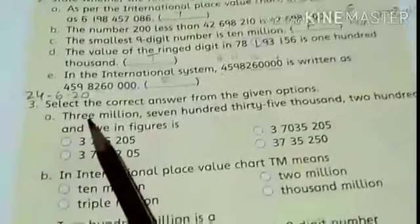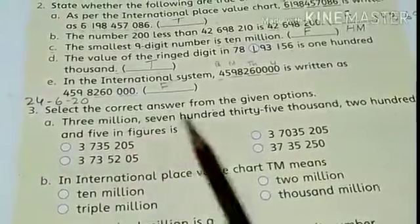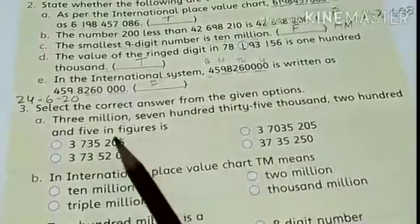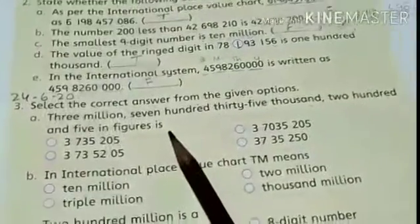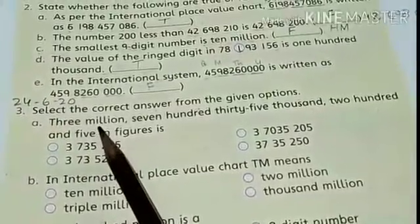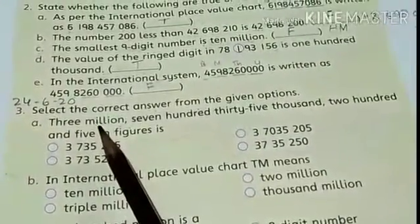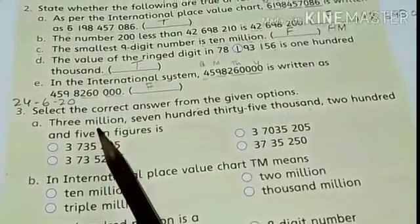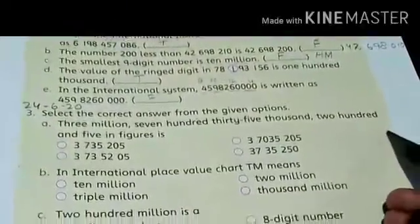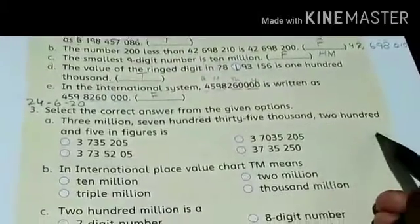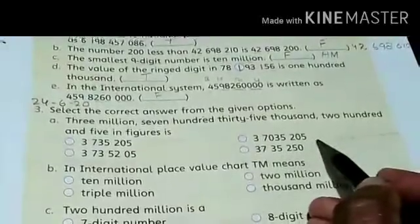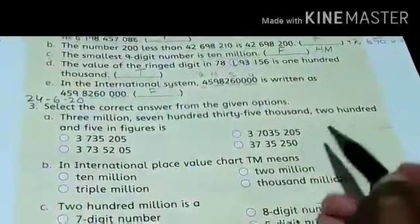The question is: 3,735,205 in figure. We have to find the place value of 3 million. 3 million is equal to a 7-digit number. First, make the place value of a 7-digit number: 3 and 4 units, 3 and 4 thousands, and 1 is for millions.